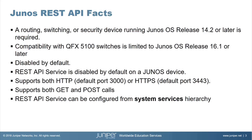Now let's talk about some of the Junos REST API facts. A routing, switching, or security device running Junos OS release 14.2 or later is required. Compatibility with QFX 100 switches is limited to Junos OS release 16.1 or later. The Junos REST API service is disabled by default for security reasons, but it can be configured easily from the system services hierarchy within Junos. REST API service supports both HTTP and HTTPS protocols. The default port for HTTP is 3000 and for HTTPS is 3443, but this can be changed if needed.